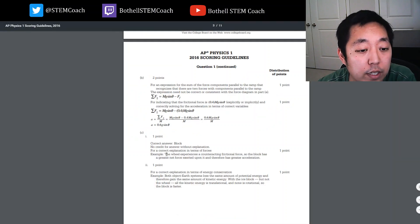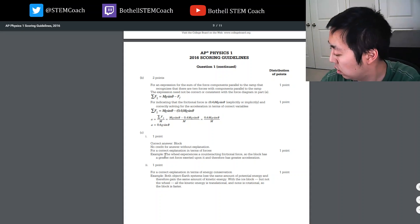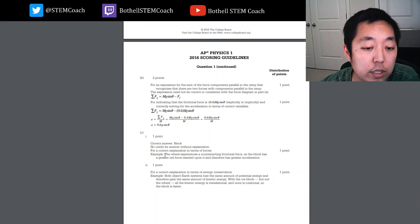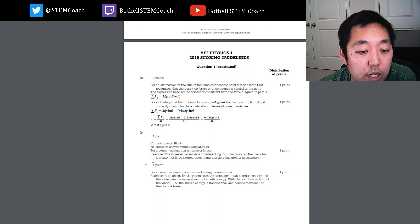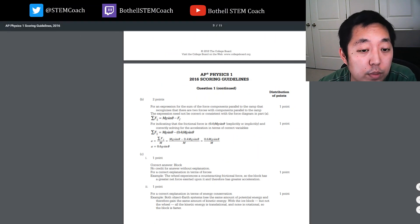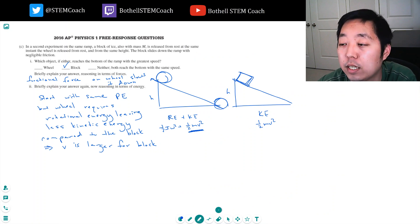Correct answer is block. The wheel experiences a counteracting frictional force, so the block is the greater net force. Yeah, yeah, that's fine. It's because there's friction in that one. Okay, so kind of messed up that one pretty bad by not reading the questions correctly. But I hope at least, you guys learned something out of that. Yeah, so thanks for watching. Please leave a comment, like, or subscribe, and I will, see you in the second free response question.